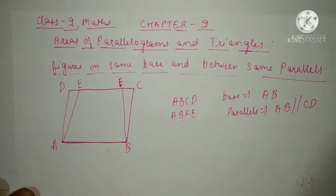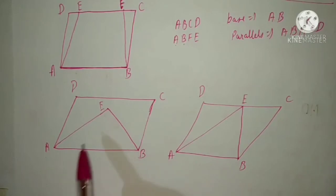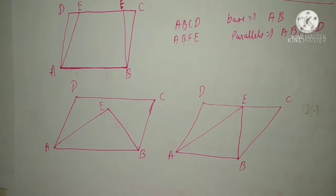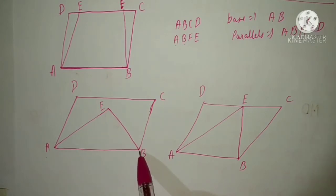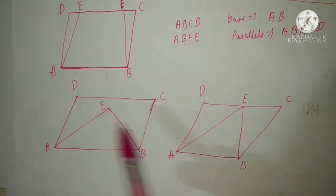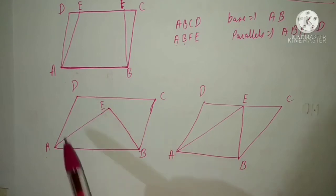Now see these two figures. One quadrilateral is ABCD and one is triangle AEB. These two figures lie on the same base AB, but this triangle does not lie between the parallel lines — AB is parallel to CD, but vertex E doesn't lie on line CD. That means they do not lie on the same base and between the same parallel lines.